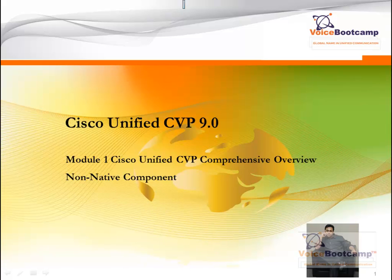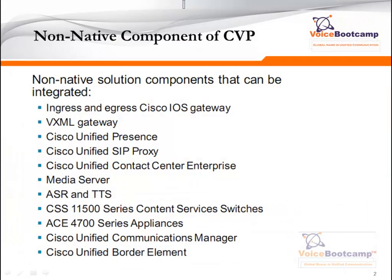In the previous slide, we talked about the native components which are built in or around the CVP application. Non-native components of CVP include Ingress, Egress, Voice Cisco IOS Gateway, VXML Gateway, Unified Presence, Unified SIP Proxy running on IOS Gateway, Cisco Unified Contact Center Enterprise (also known as ICM), Media Server, ASR, TTS, CSS 11000 Series Content Switch Services or ACE 4700 Series Application, Unified Communication Manager, and Unified Border Element.